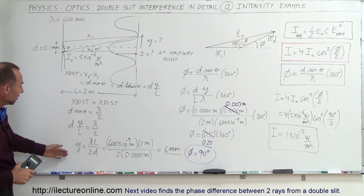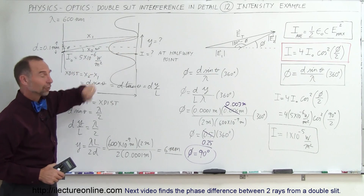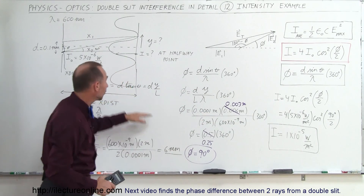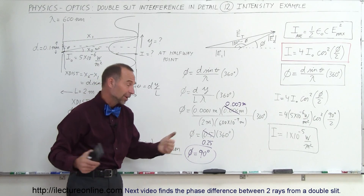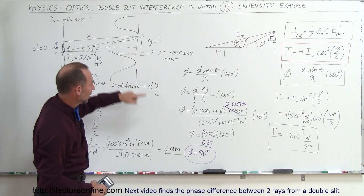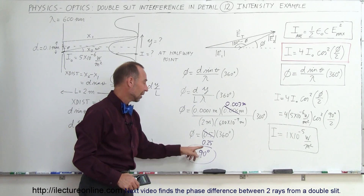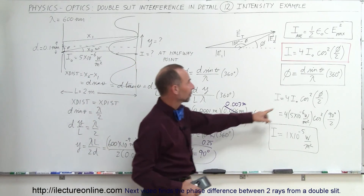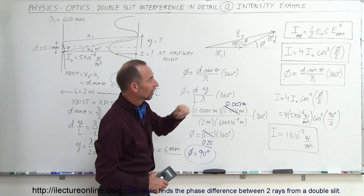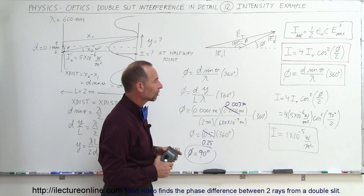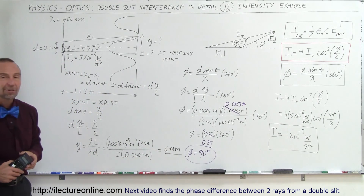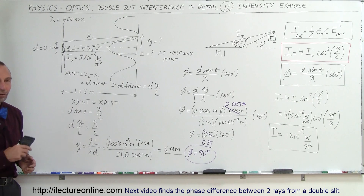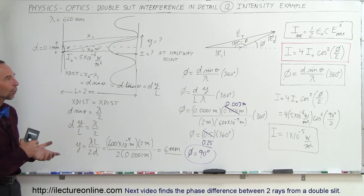That's how we do that. First we find the distance to any point — in this case the first minimum. Then we find the phase difference using d times y over l. I plugged in the distance to the first minimum first, giving a phase difference of 180 degrees, which makes sense. Then I plugged in half the distance, 3 millimeters instead of 6, getting a quarter of a full phase — 90 degrees. We plug 90 degrees in, divide by 2 to get cosine squared of 45 degrees, which is 0.5 times 4 times the intensity of a single beam. That's how we calculate the intensity anywhere along the screen. I'll do a few more examples to build comfort with these equations.